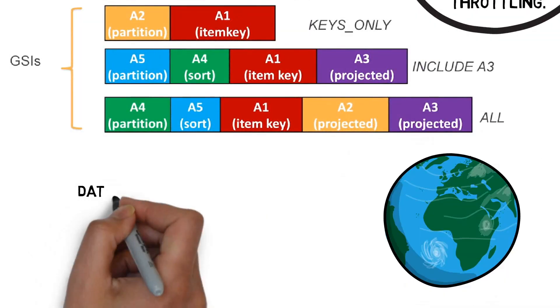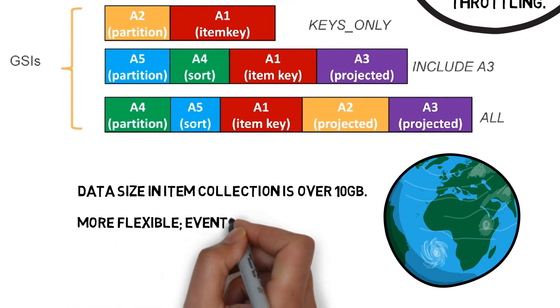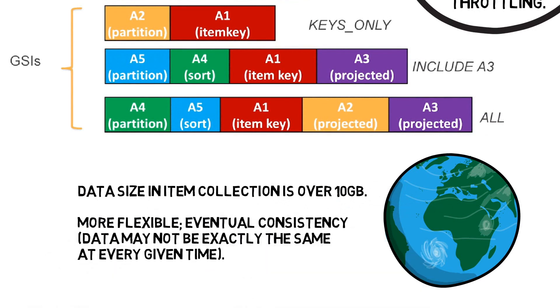We will select a global secondary index when we want our item collection data size to be over 10 gigabytes. It allows for more flexibility and eventual consistency, not highest consistency, but data might not be exactly the same at every given time.